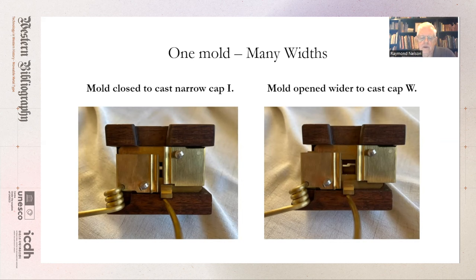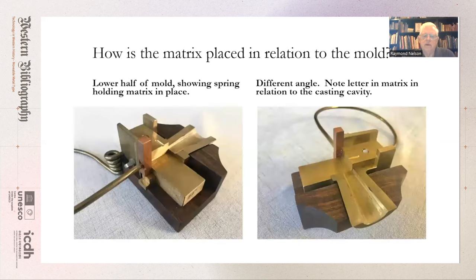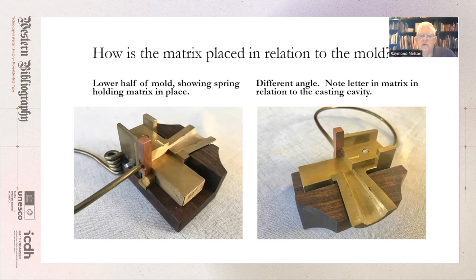You can see the matrix is held under the mold by a spring. If you look on the left-hand side, that's the lower half of the mold, and in the picture on the right is the upper half. The matrix is often tied to the mold, but the spring is essentially keeping it tight against the bottom of the mold.